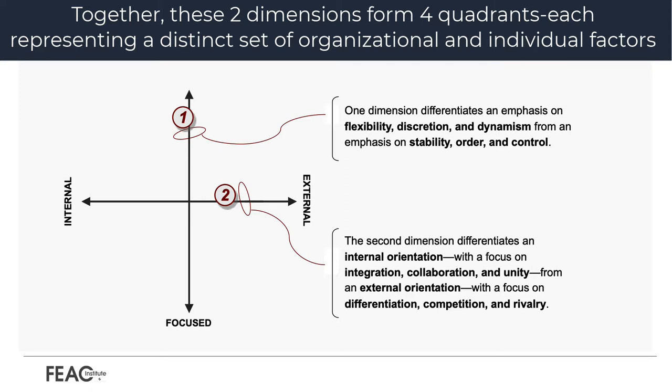Developed by Robert Quinn and John Rohrbaugh, the Competing Values Framework is a theory developed initially from research done on major indicators of effective organizational performance. Based on statistical analysis of a comprehensive list of effectiveness indicators, Quinn and Rohrbaugh discovered two major dimensions underlying conceptions of effectiveness.